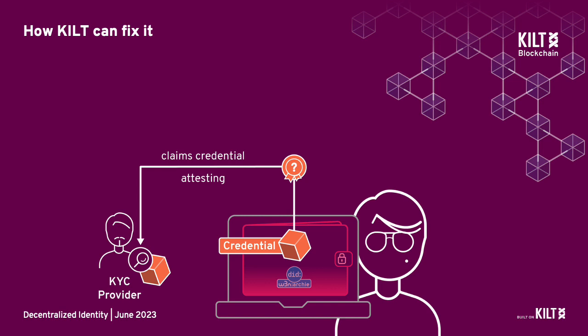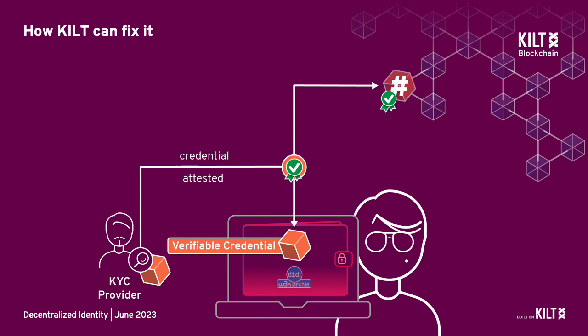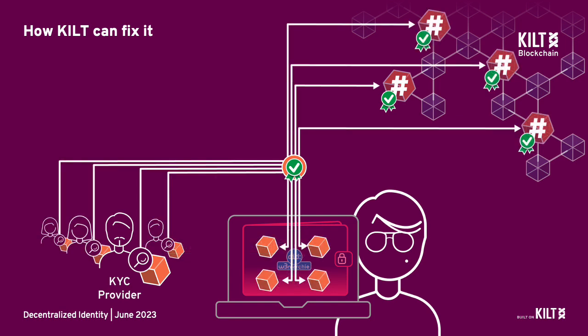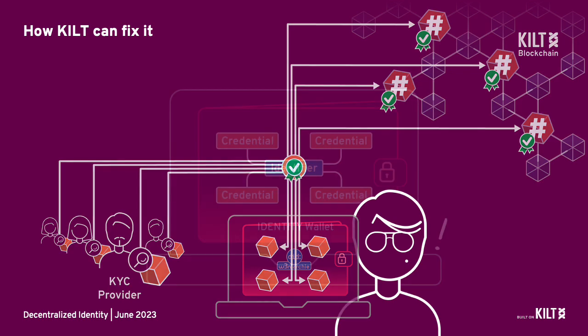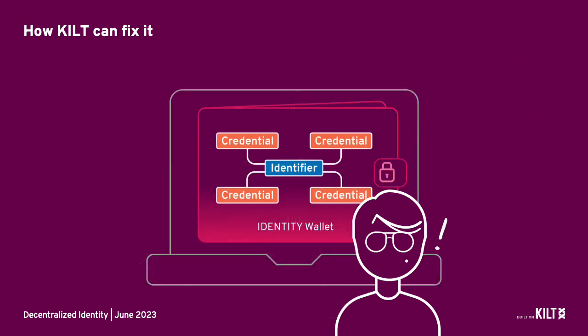For example, you can go to a trusted provider and request a credential that shows your age. Once the attester has checked that the information you sent is correct and meets the attestation requirements, you will receive a credential in your wallet. A hash of the credential is anchored to the KILT blockchain. In this way, the issuer can revoke it later if the information is no longer true. Note: your private information is never stored publicly on the blockchain. You can add as many credentials as you like to build your identity. The issuer never knows what you do with them — they are not stored centrally. And they stay under your control on your device.